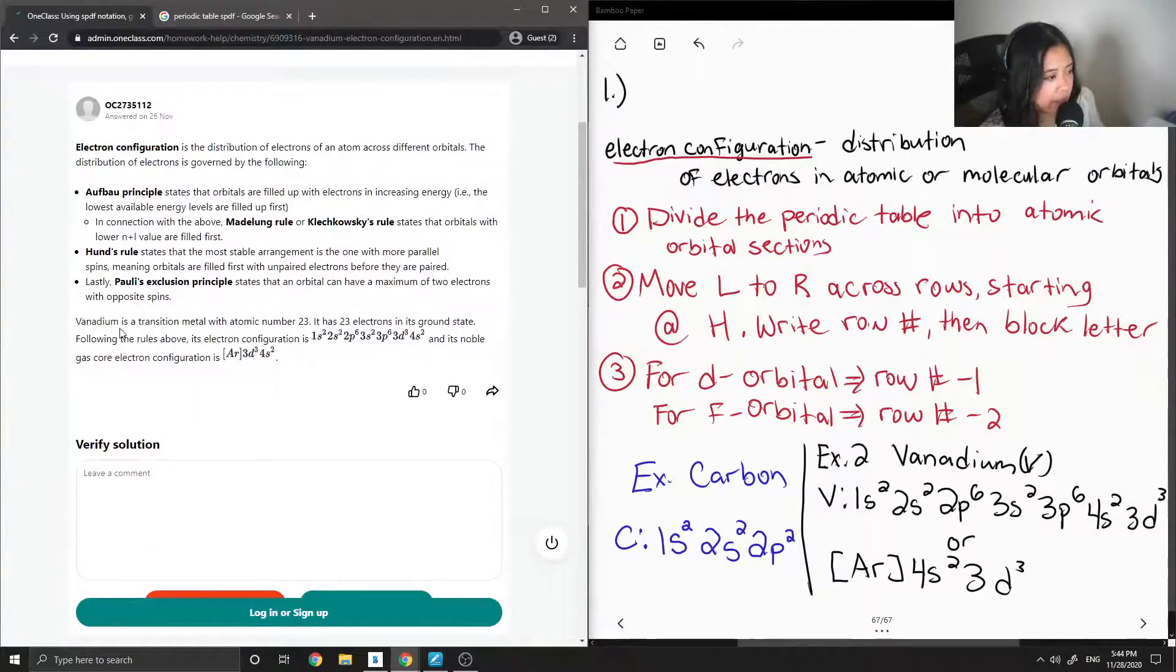Vanadium is a transition metal with atomic number 23. It has 23 electrons in its ground state. Following the rules above, its electron configuration is 1s2, 2s2, 2p6, 3s2, 3p6, 3d3, 4s2, and its noble gas core electron configuration is argon, 3d3, 4s2.